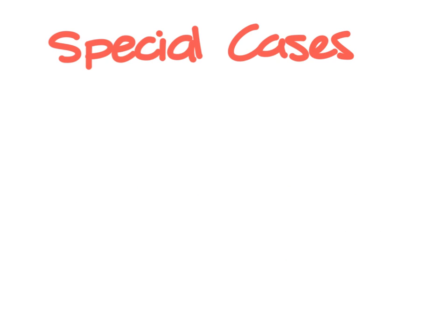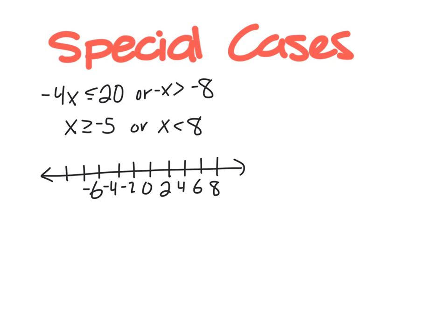Let's talk for a minute about some special cases. This is not on your paper. If I was given this negative 4x is less than or equal to 20, or negative x is greater than negative 8, I would solve it as follows. I get x is greater than or equal to negative 5, or x is less than 8. But something weird happens. When I graph the inequality x is greater than or equal to negative 5, I fill in an arrow going to the right here. And when I graph x is less than 8, I fill in an arrow going this way. But keep in mind that these arrows go forever.